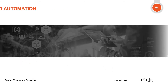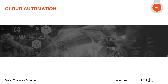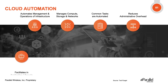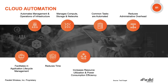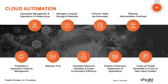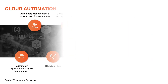Cloud automation is the first stage in network deployment. It automates management and operations of the network infrastructure, manages compute, storage, and networks, and automates common repetitive tasks. It reduces administrative overhead, facilitates application lifecycle management, and significantly reduces time and effort. It also increases resource utilization and power consumption efficiency.